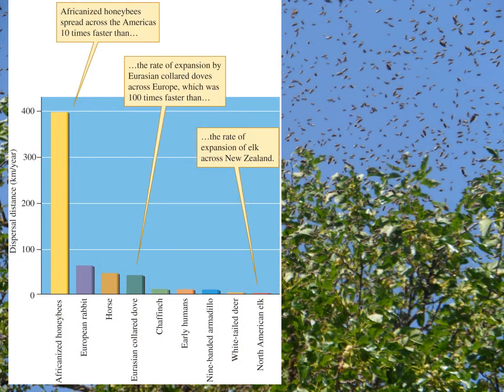A graph compares dispersal distances in kilometers per year for the species discussed. The Africanized honeybee is shown as the first bar, ranging from 300 to 500 kilometers per year — around 400 on average — standing out as quite different from other species. The Eurasian collared dove is also shown, with a much lower dispersal rate of around 45 kilometers per year. The Africanized honeybee is clearly an anomaly among the examples provided.